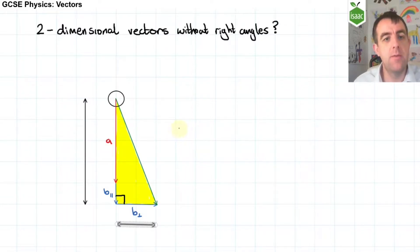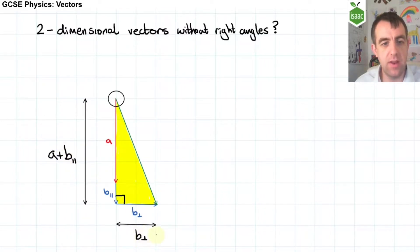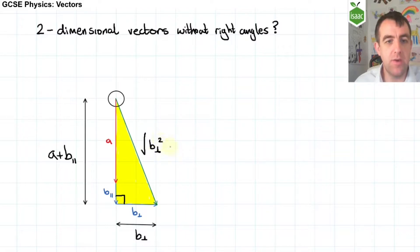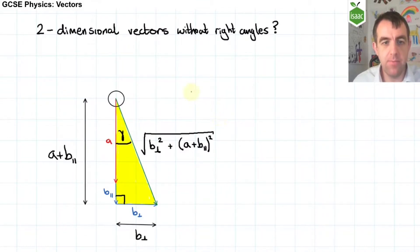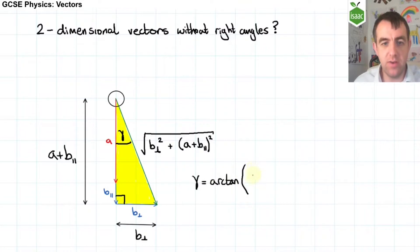So the magnitude of the resultant vector is going to be the square root of the perpendicular component of B squared, plus A plus the parallel component of B, all squared. And I would find the angle, which I'll call gamma, by using the arctan — or tan to the minus one if you prefer that notation — of the opposite, which in this case is the perpendicular component of B, divided by the adjacent, which is A plus the parallel component of B.